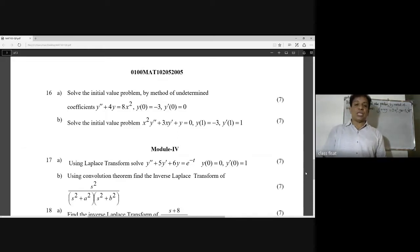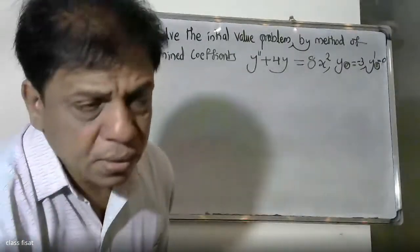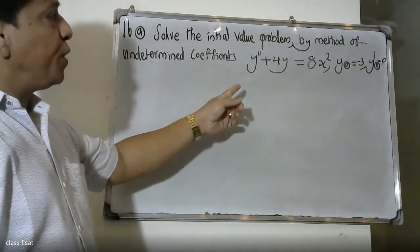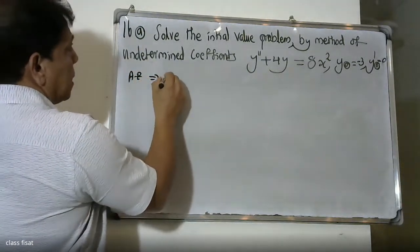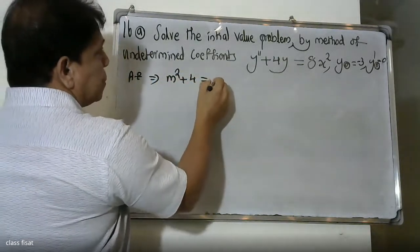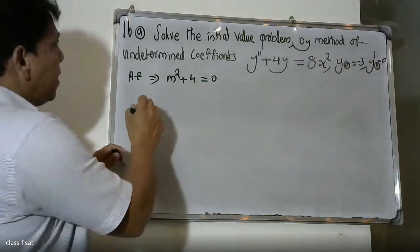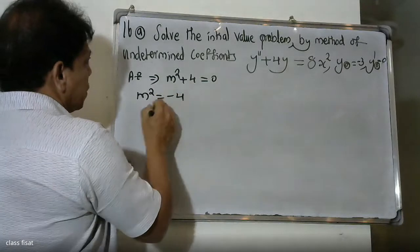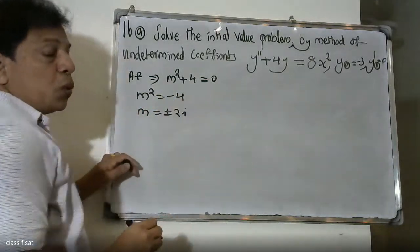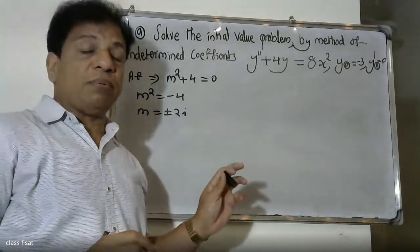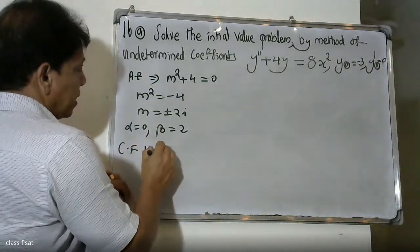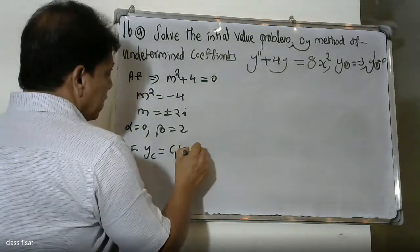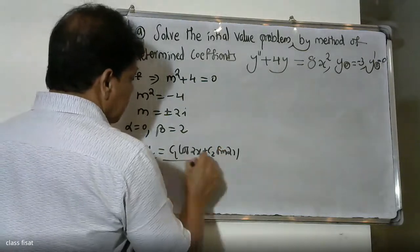First, we solve the homogeneous equation y'' + 4y = 0. The auxiliary equation is m² + 4 = 0, so m² = -4, giving m = ±2i. The roots are in the form α ± iβ where α = 0 and β = 2. Therefore the complementary function is yc = c1·cos(2x) + c2·sin(2x).